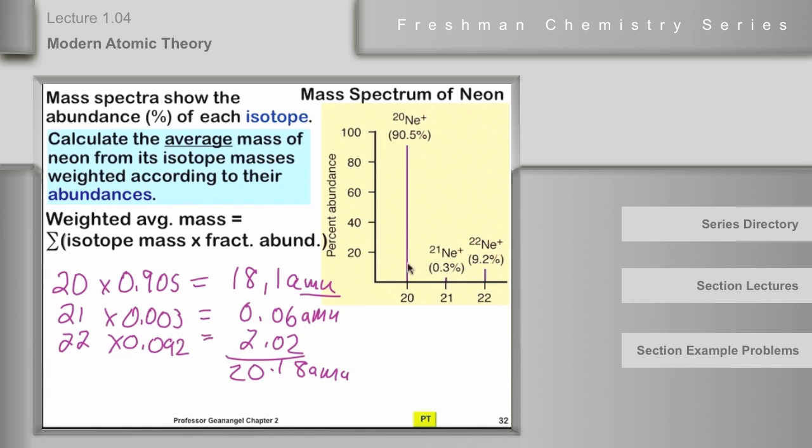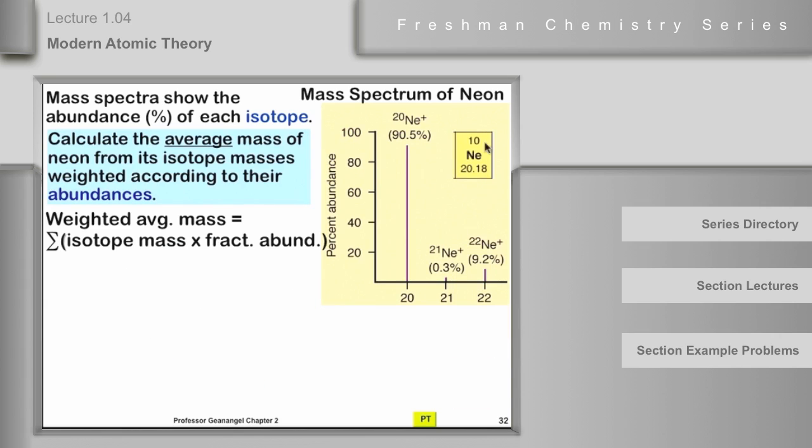Now, what I want to say is the periodic table will reflect this number. However, we would expect the periodic table to show that the mass of neon is 20.18. And in fact, here is the entry in the periodic table for neon, and you can see it is 20.18.